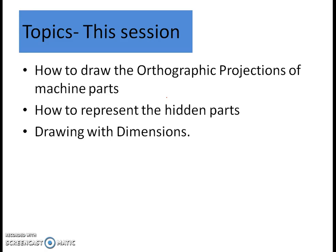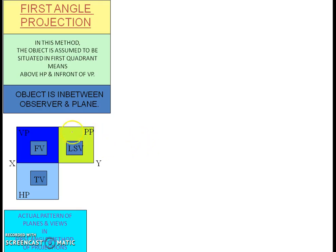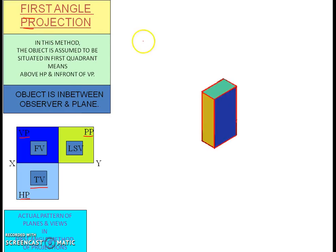As previously established: from VP we get the front view, from VP we get the side view, and the top view from the HP. We are using only the first angle projection because we are following the ISO standards.